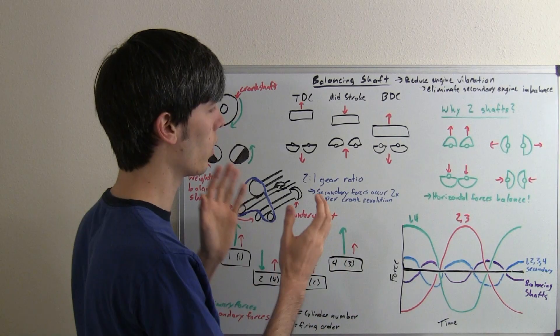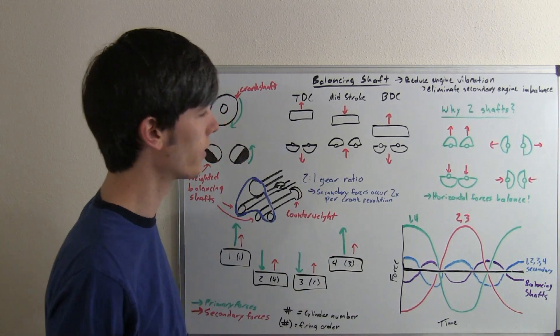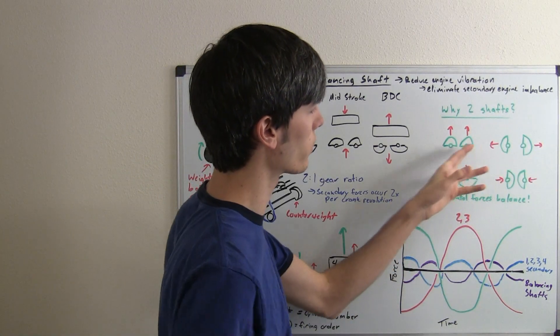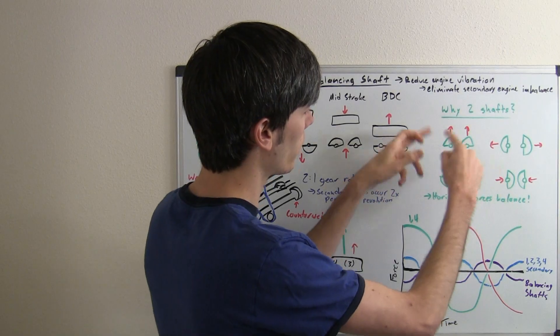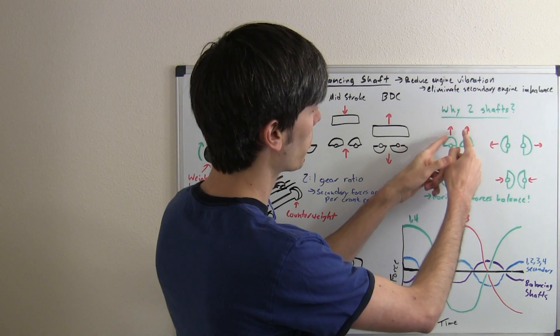The question may be: why would you have two shafts? You could just have one shaft to counteract these secondary forces, and yes you could. The problem is you would get a side-to-side vibration. By having two that are rotating in opposite directions,